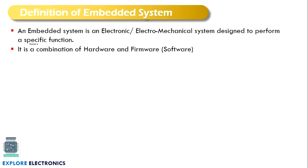This is a very important point. The embedded system is an electronic system or we call it an electro-mechanical system. It is designed to perform a specific function and it is a combination of hardware and firmware. Firmware in this sense is a software — there is hardware and to the hardware we are going to use a software program to embed on the hardware. That will be an embedded system.